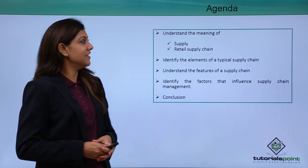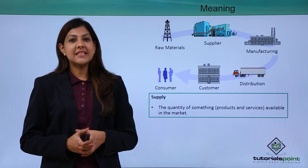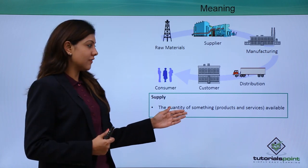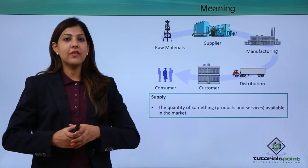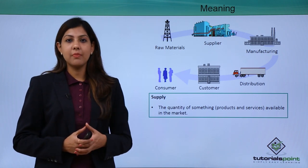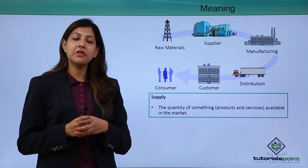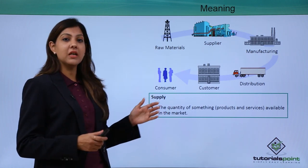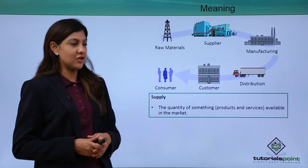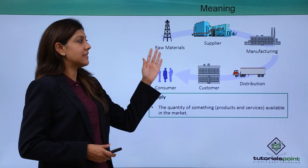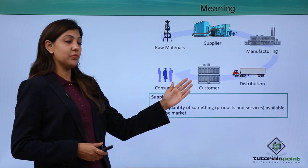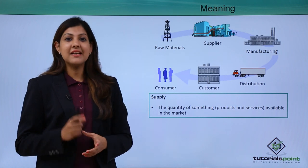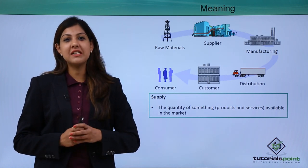What exactly is the meaning of supply? A supply is the quantity of something — it could be products or services — which are available in the market. There is a lot of requirement by different retailers as well as customers for different products and services, and hence the supply should be at maximum so that you don't run out of inventory. There are raw materials, suppliers, manufacturers, distributors, and customers, forming the larger market.